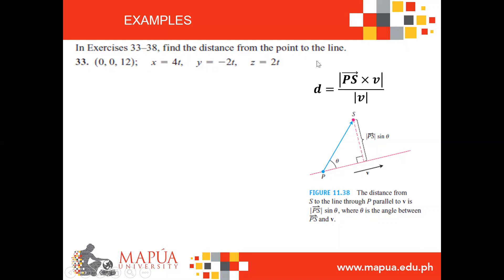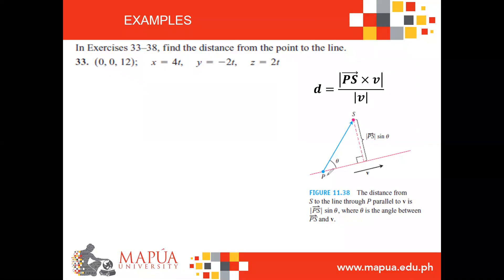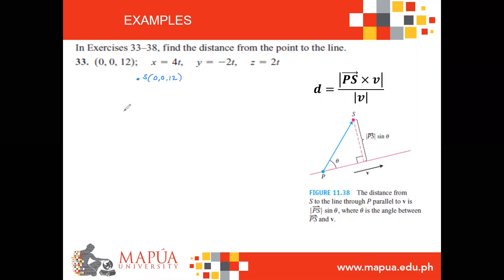In this example, we are asked to find the distance from a point to a line. The given point is S with coordinates (0, 0, 12), and the line is given in parametric equation form. Let us now find vector PS. Here we draw the given point and line L — point S has coordinates (0, 0, 12), and this is your line L.